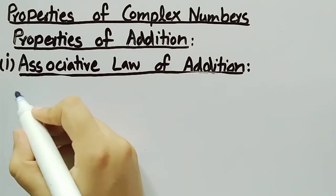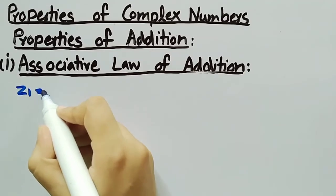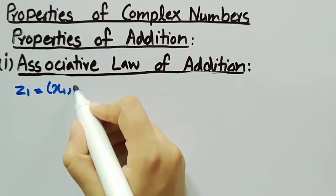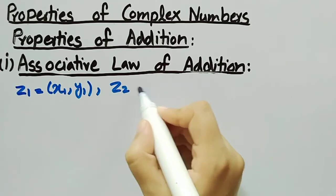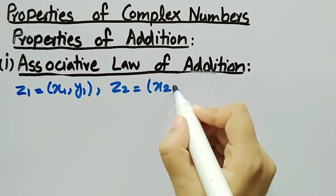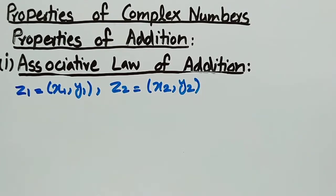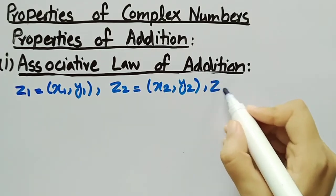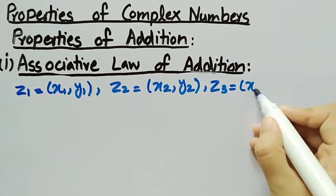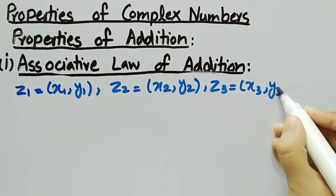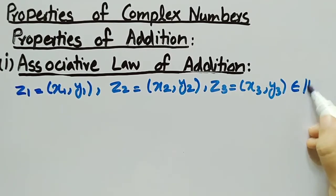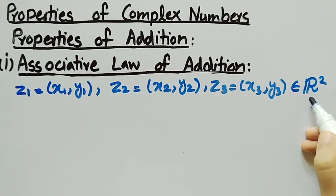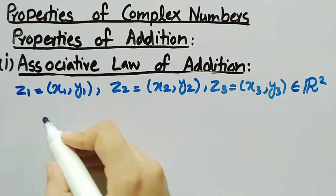For this, we consider Z1 equal to (X1, Y1), Z2 equal to (X2, Y2), and Z3 equal to (X3, Y3), where Z1, Z2, and Z3 belong to R², which is the set of all complex numbers.